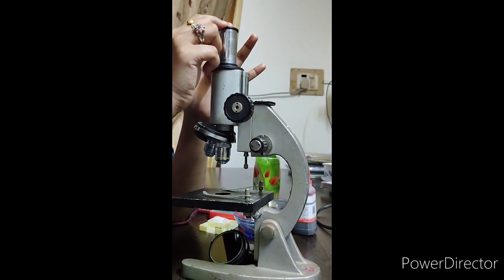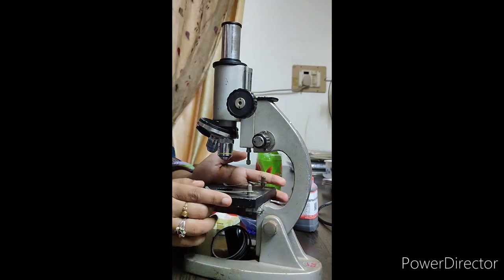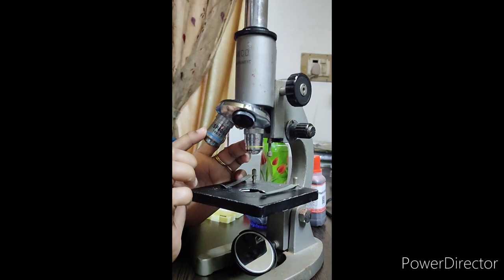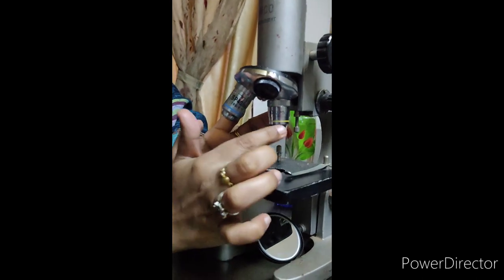And one more lens is present in the microscope. And they are known as the objective lenses here. In this microscope, I am having two objective lenses.